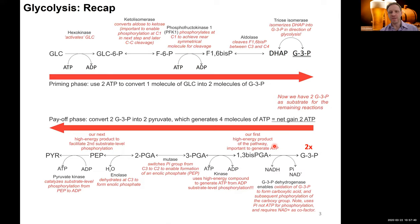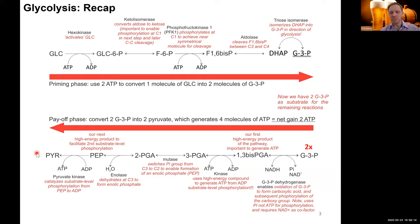To recap glycolysis from lecture 3, here again is the glycolytic pathway. I deliberately took the structures out because I want us to focus on the chemical logic of what is happening and what we want to achieve in our 10 steps of aerobic glycolysis. We took glucose and our purpose was to break it down to release and form ATP. In those 10 steps we break down glucose and our end product is two molecules of pyruvate.